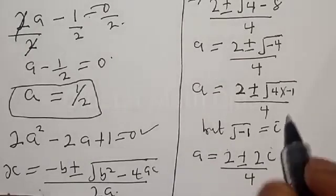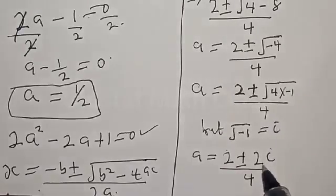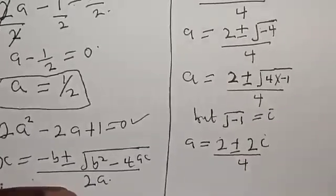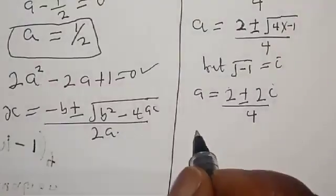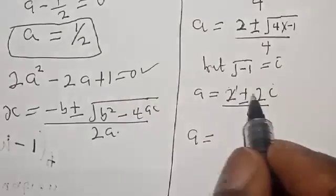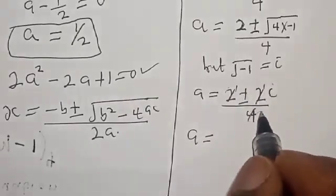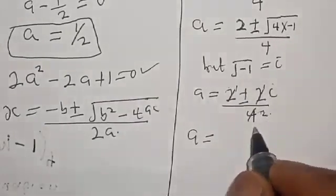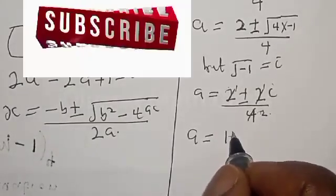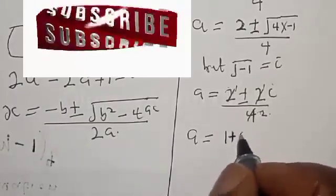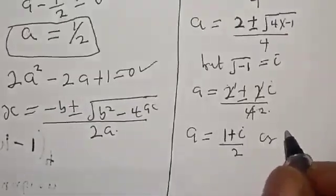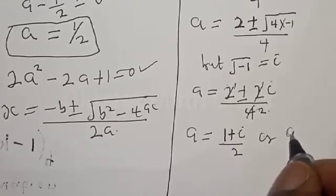Now, the square root of minus 1 equals i. Therefore we have a equals 2 plus or minus 2i, over 4. Since the square root of 4 is 2, we get a equals 2 plus or minus 2i, over 4. Simplifying by dividing numerator and denominator by 2, a equals 1 plus or minus i, over 2.